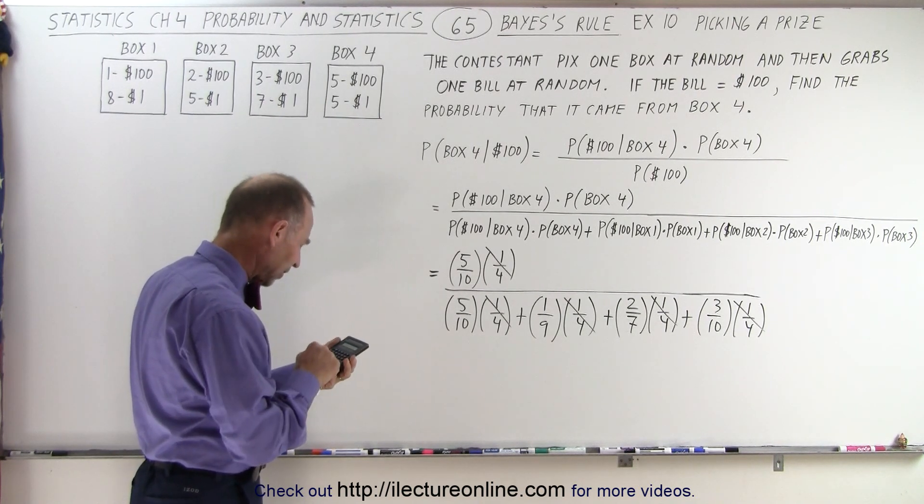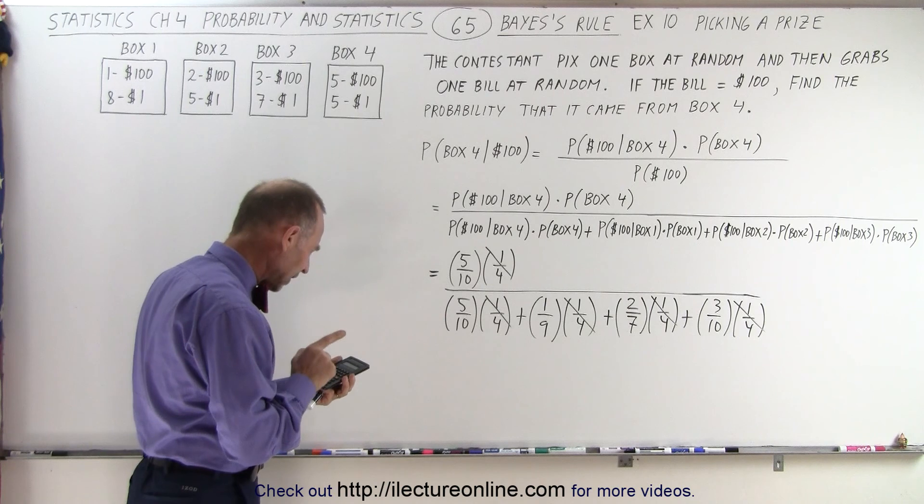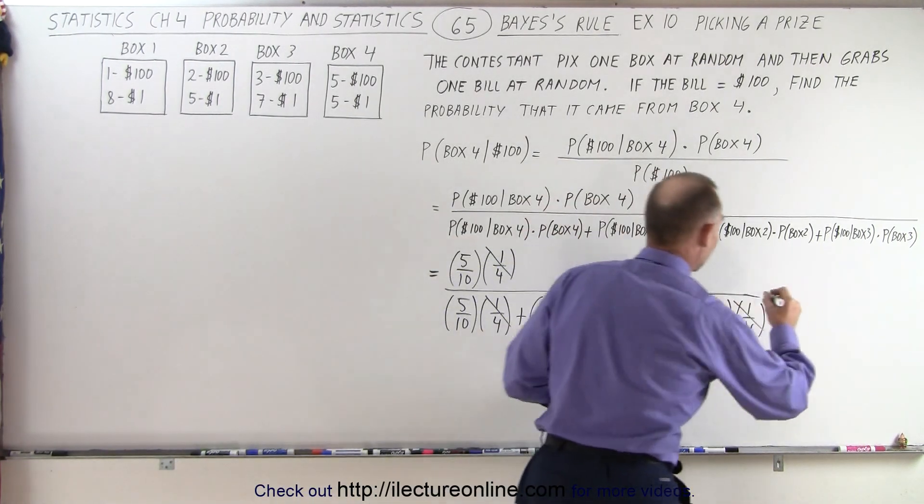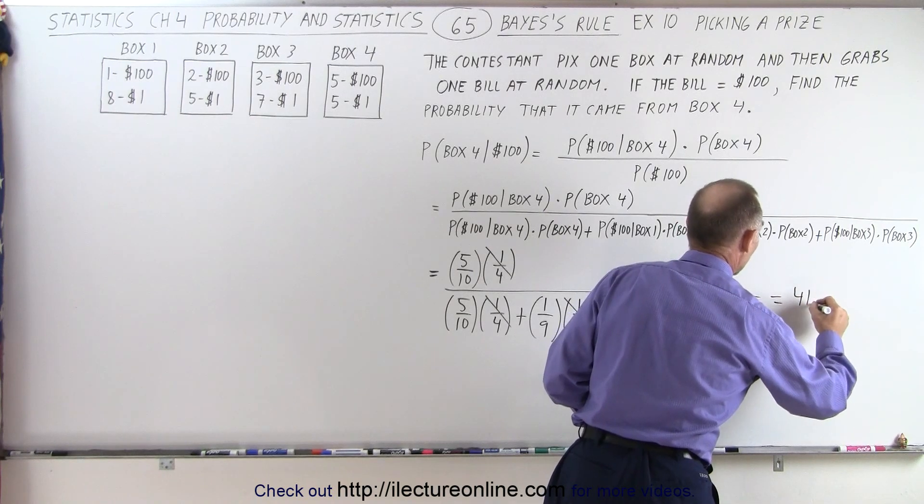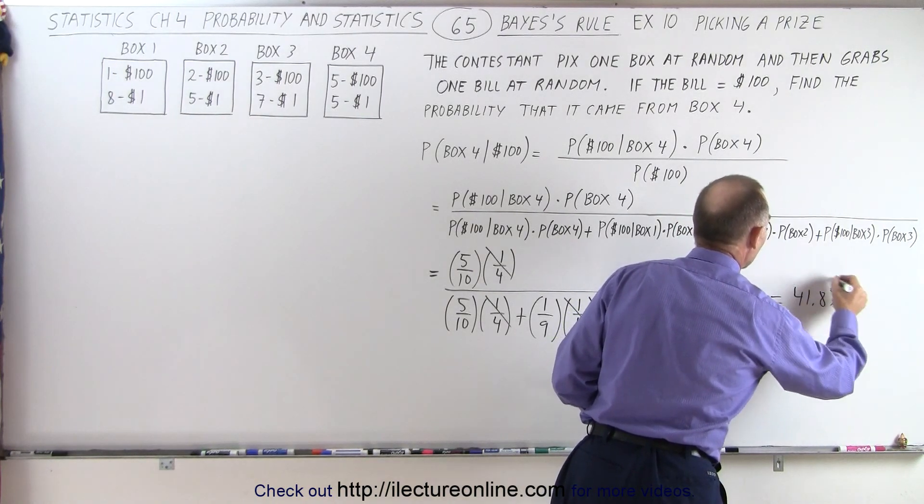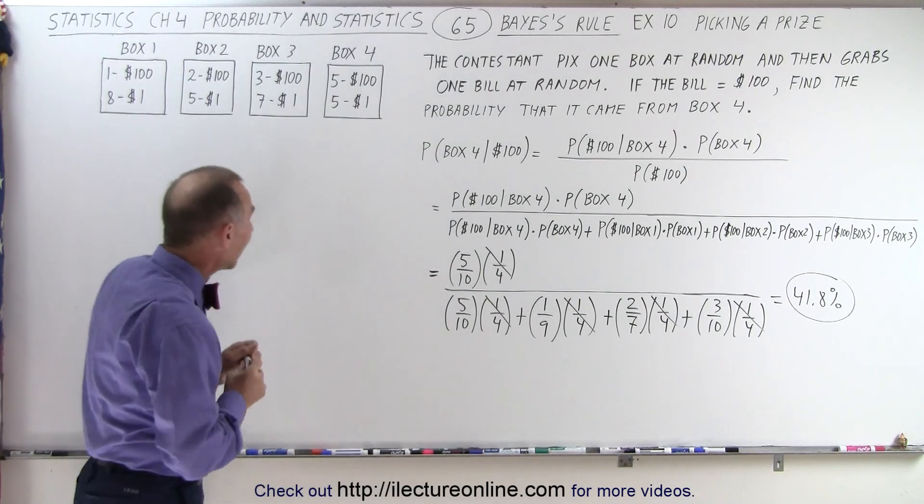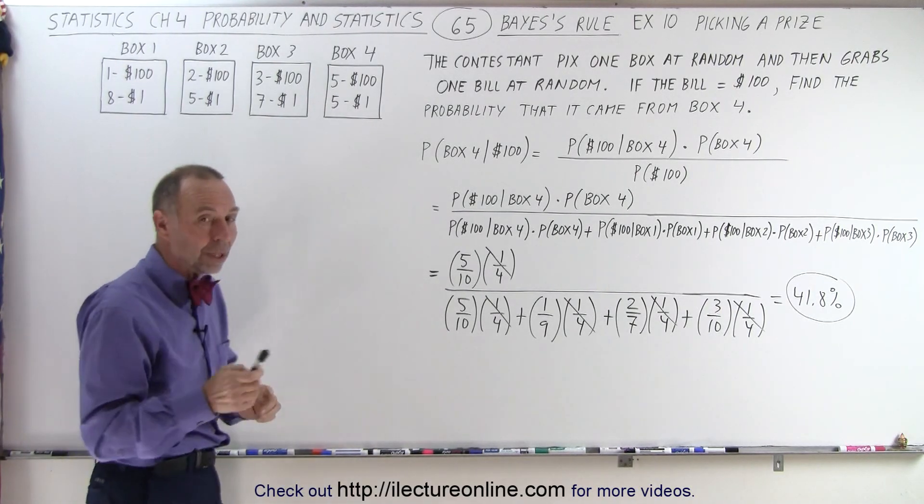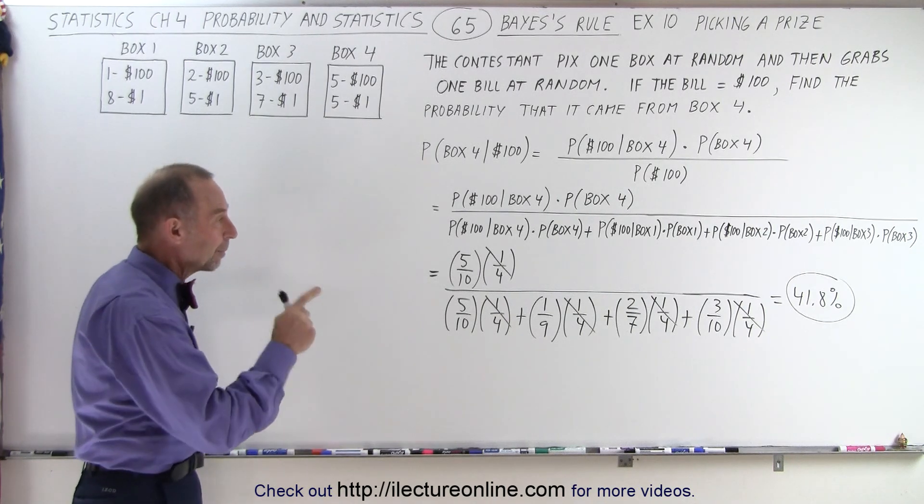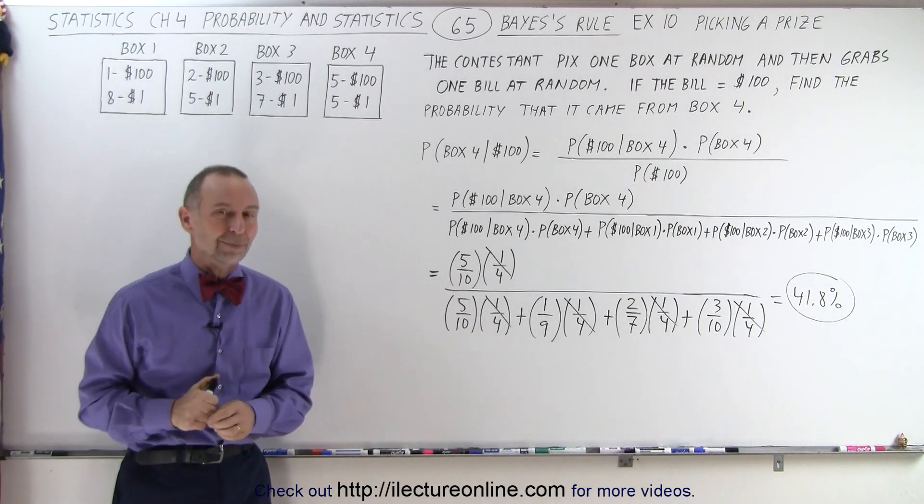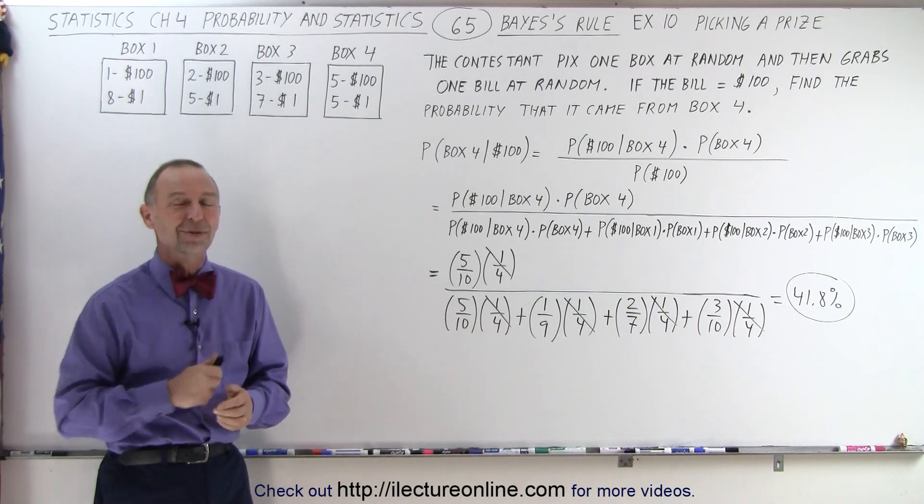So we move that to the denominator by taking the inverse, and then multiplying times 0.5. And we get 41.8 percent. So this is equal to 41.8 percent, which means that since we could have picked any of the four boxes at random, and we know that we picked a hundred dollar bill, the probability that that bill came from box four is 41.8 percent. And that is how it's done.